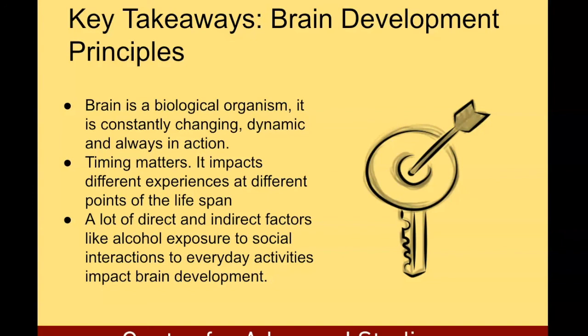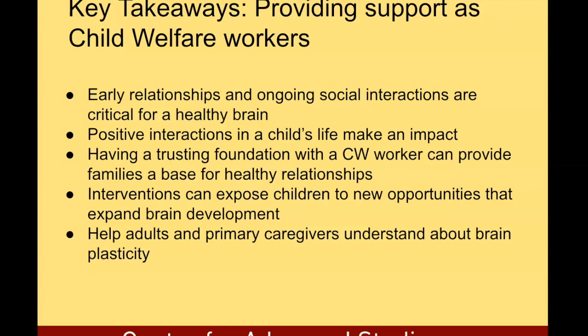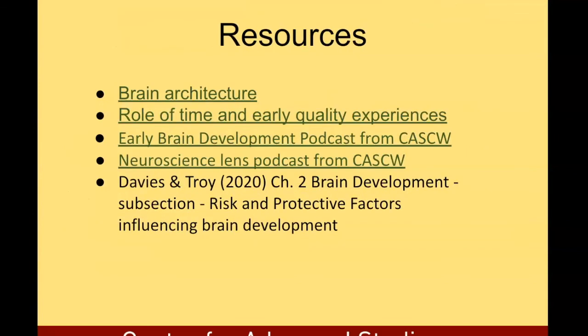To end this module, here is a summary of key takeaways on brain development principles. We covered brain architecture and how the brain is a biological organism — changing, dynamic, and always in action. Timing matters. Many direct and indirect factors, like alcohol exposure, social interactions, and everyday activities, impact brain development. Early relationships and ongoing social interactions are critical. Positive interactions with a child can make an impact, and having a trusting foundation with a child welfare worker can provide families a base for healthy relationships. Interventions can expose children to new opportunities, and helping adults and primary caregivers understand brain plasticity is also important. Thank you for watching this video — please go over the resources page and feel free to reach out for more information. We look forward to any feedback you may have.